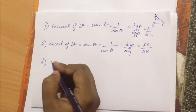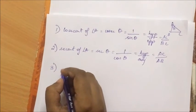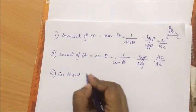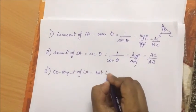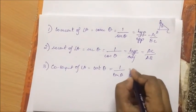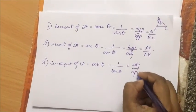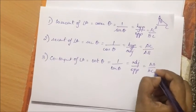Coming to the third: the third was tan theta, so obviously there has to be a reciprocal for tan. We will call it cotangent of angle A—short form, cot theta—which is 1 by tan theta, and that is adjacent over opposite, which is AB over BC.